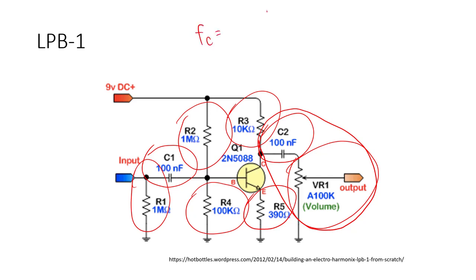1 divided by 2π times the value of the capacitor times the value of the potentiometer, which gives roughly 15.9 hertz as the cutoff frequency. This is slightly below the 20 hertz threshold of human hearing, and we always like to have the cutoff frequencies for high-pass filters be below 20 hertz, so that's good.